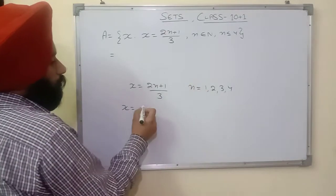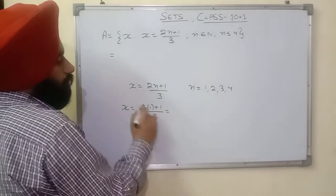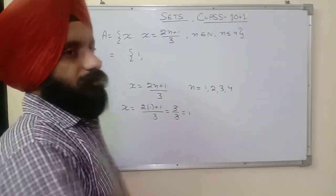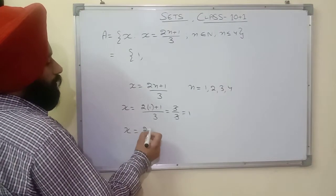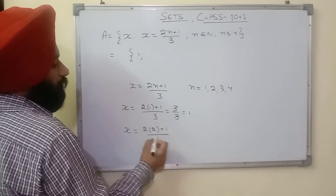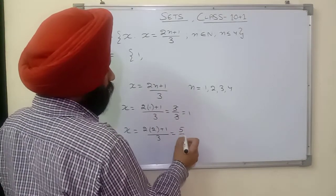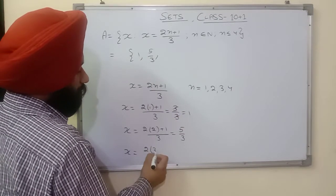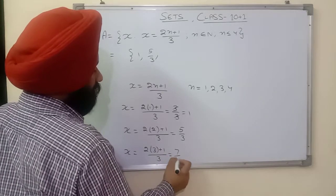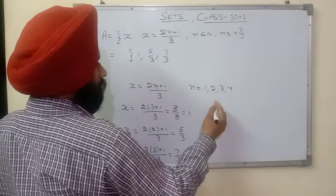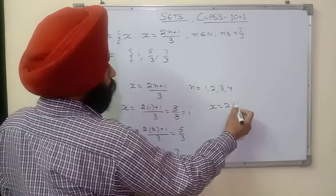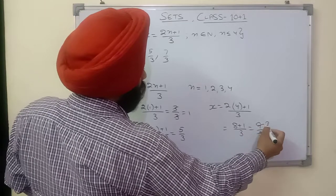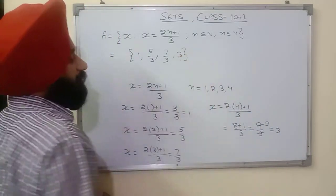When n = 1: x = (2×1 + 1)/3 = (2 + 1)/3 = 3/3 = 1. So the first element is 1. When n = 2: x = (2×2 + 1)/3 = (4 + 1)/3 = 5/3. When n = 3: x = (2×3 + 1)/3 = (6 + 1)/3 = 7/3. When n = 4: x = (2×4 + 1)/3 = (8 + 1)/3 = 9/3 = 3. So the fourth element is 3.